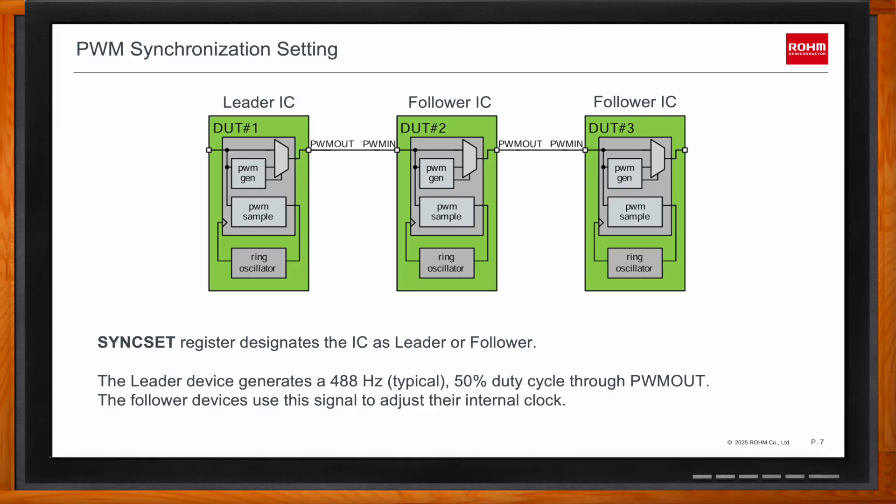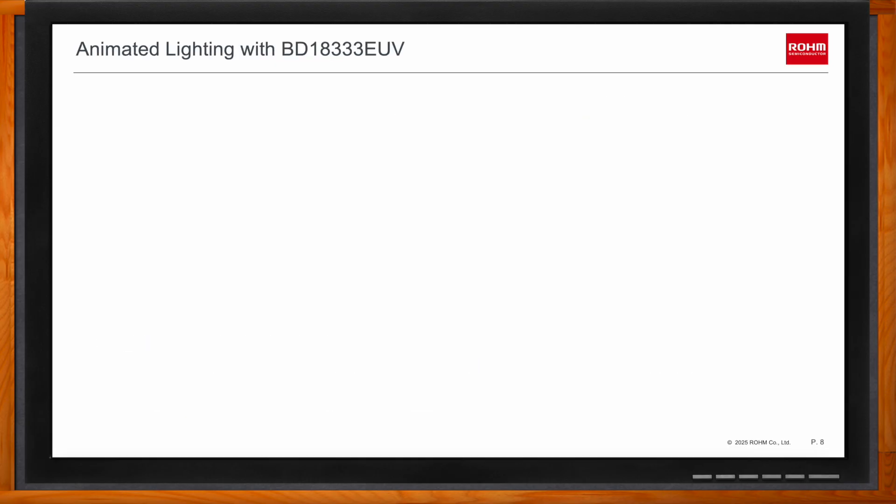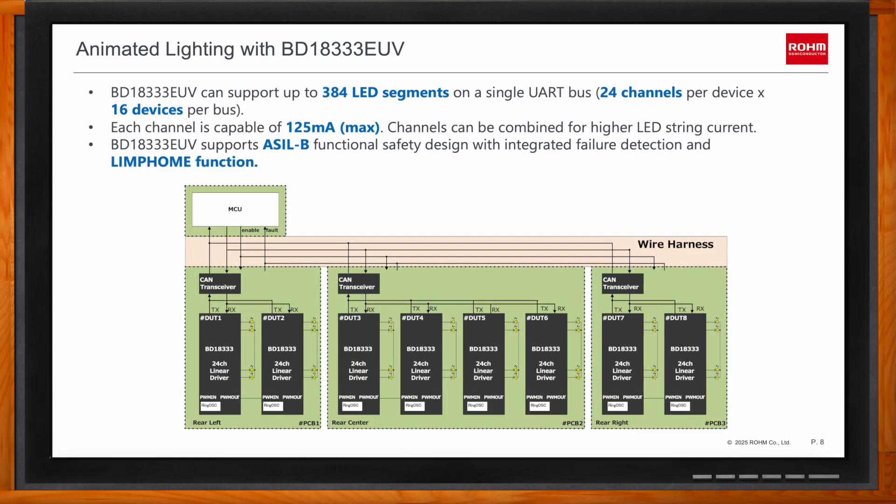Here's an example block diagram featuring multiple BD18333 devices across different boards, showing control for the left, right, and center rear lamps. On each board, we're making use of the PWM synchronization feature for more accurate timing. Since you can have up to 16 different device addresses and each device has 24 channels, you can control up to 384 LED segments on one bus.